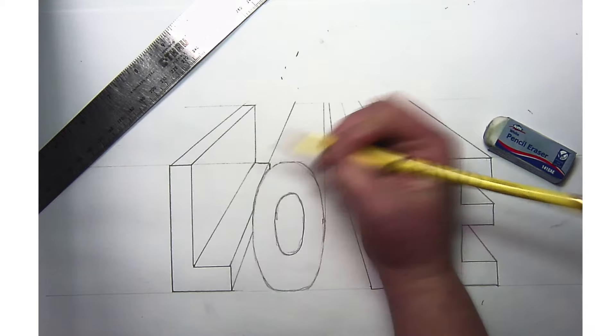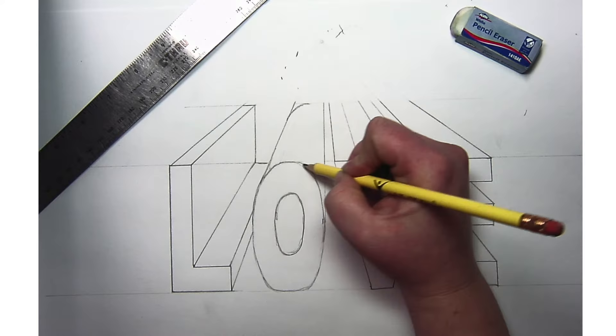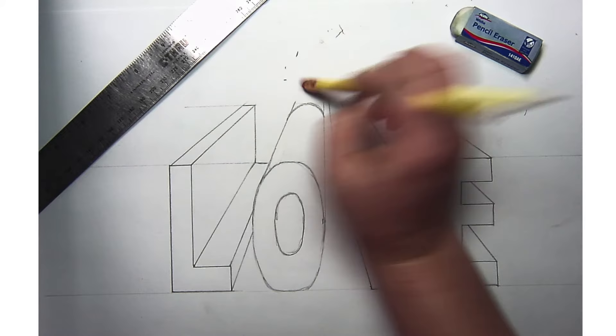For the O, I actually want the line in the back to follow the same curved shape. See how I'm making it curve there? I'm making it curve in the back so that the end of it follows that same curve at the front of the letter. It's sort of like a cylinder that goes back into space.